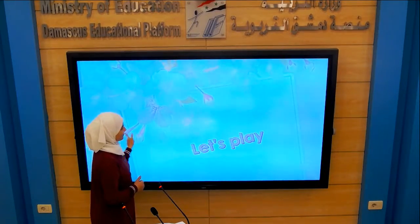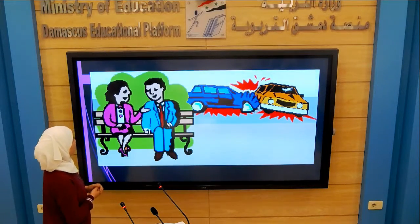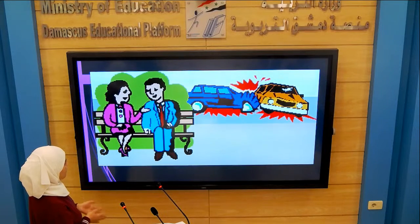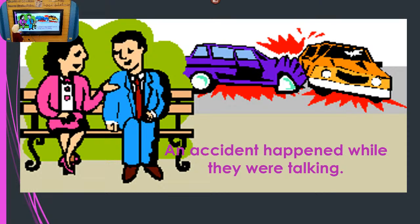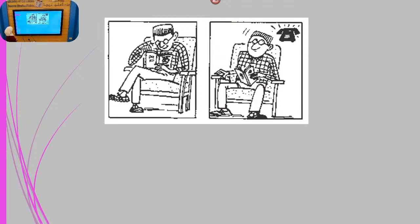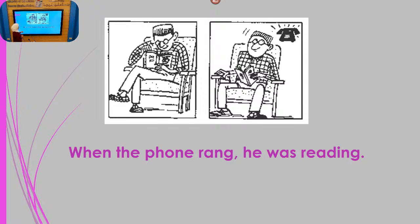Let's play a game. Look at this picture — a man and his wife. What are they doing and what happened? They were talking when an accident happened, or: while they were talking, an accident happened. Another picture: he was reading a book when the phone rang — or: when the phone rang, he was reading.